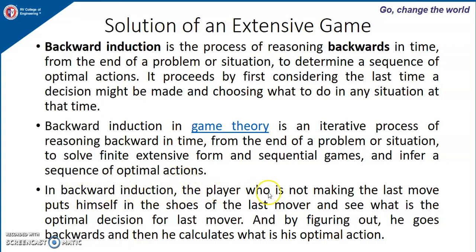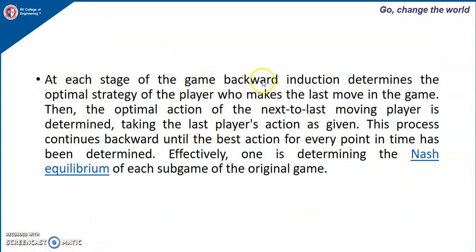In backward induction, the player who is not making the last move puts himself in the shoes of the last mover, sees what is the optimal decision for the last mover, and by figuring that out, goes backwards and calculates what is his own optimal action. At each stage of the game, backward induction determines the optimal strategy of the player who makes the last move. Then the optimal action of the next-to-last moving player is determined, taking the last player's action as given. This process continues backward until the best action for every point in time has been determined. Effectively, one is determining the Nash equilibrium of each sub-game of the original game.